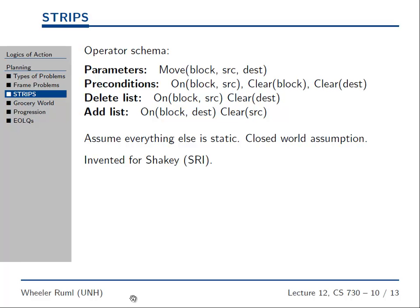Every action is going to have a name, like 'move' — move this block from here to there. It's going to have preconditions: the block is here, and it's clear, there's nothing on top of it, and the destination is clear. I'm going to make false that the block is here, and make true that it is there. It is no longer here, it is there; it's no longer the case that the destination is clear, and it's now true that the source is clear. This super simple representation is called STRIPS.